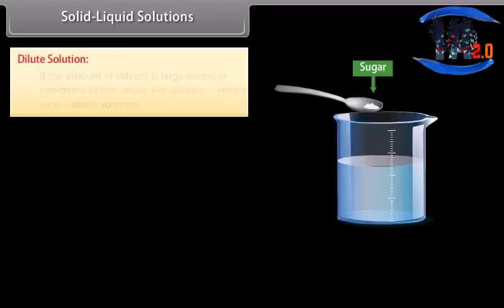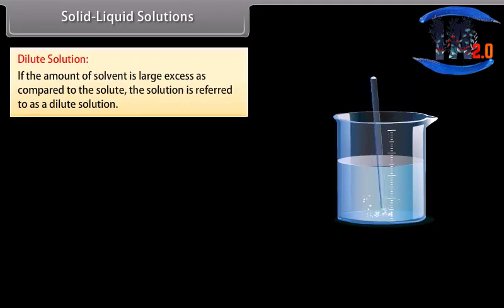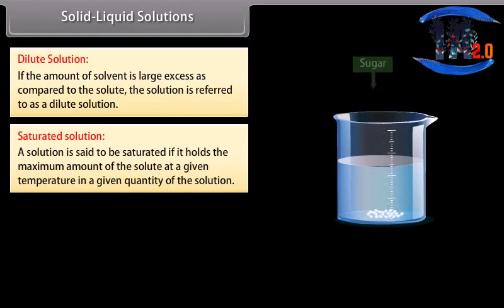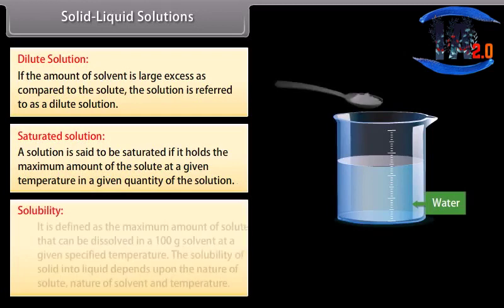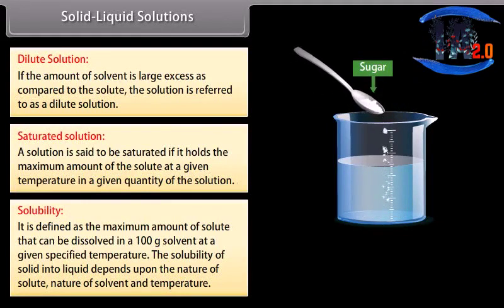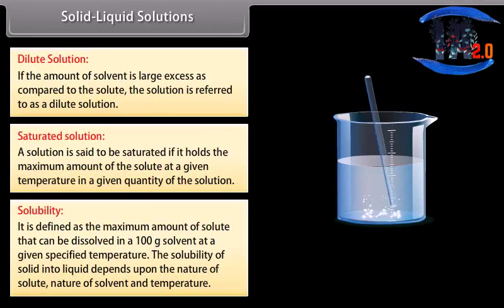In solid-liquid solutions, a small amount of solute is dissolved in a large quantity of solvent to form a dilute solution. A solution is said to be saturated if it holds the maximum amount of solute at a given temperature in a given quantity of solution. Solubility is defined as the maximum amount of solute that can be dissolved in 100 grams of solvent at a given specified temperature. The solubility of solid in liquid depends upon the nature of solute, nature of solvent, and temperature.